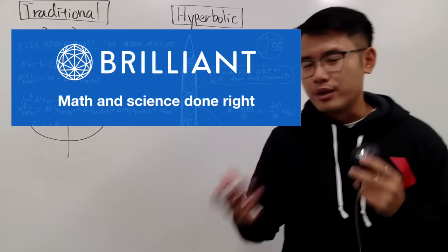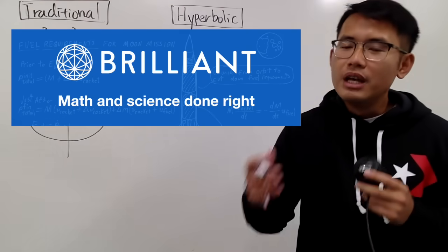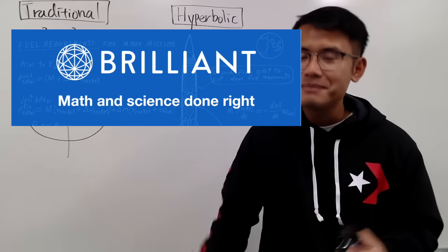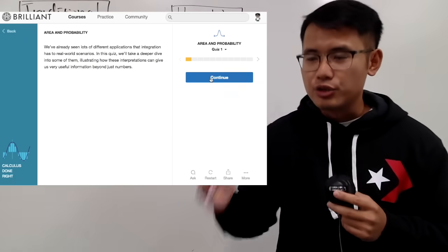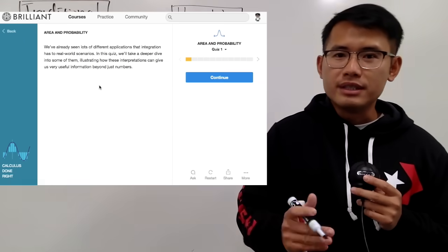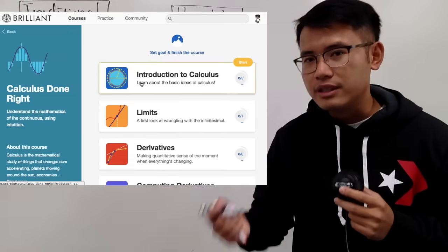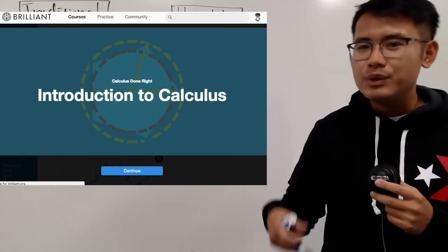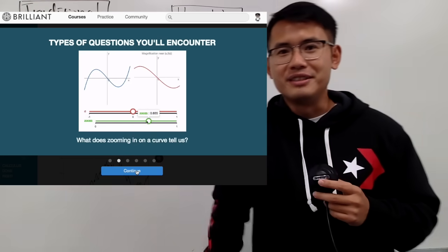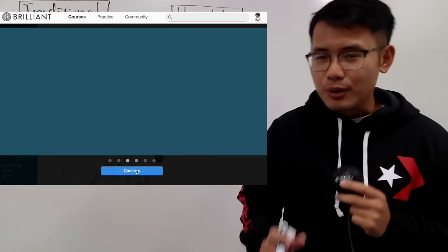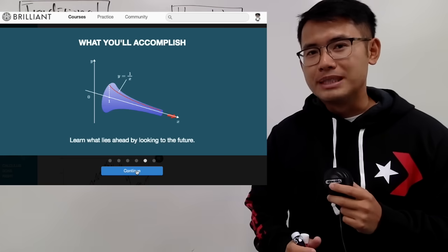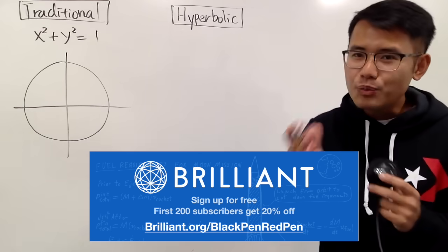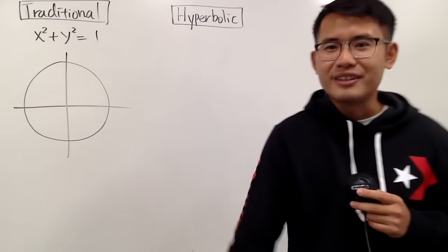And before we start, I just want to thank Brilliant.org for sponsoring this video. If you're looking for a place to learn more about math, or maybe to get ahead in your calculus classes, Brilliant.org is an excellent place for you guys to go. Be sure you guys go check them out. They have a lot of interesting courses, and they are designed in an interesting and challenging way, so you guys won't be bored — courses in calculus, number theory, discrete math, etc. If you guys are also interested to sign up for the annual premium subscription, you guys can use the link, and that's one of the best ways for you guys to support my channel as well. Thank you guys so much.